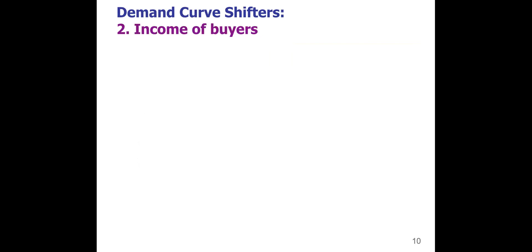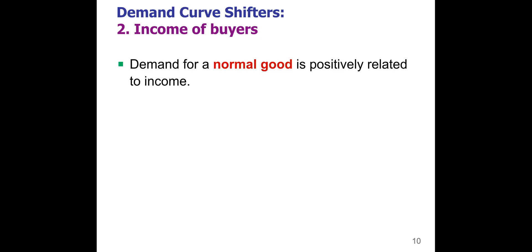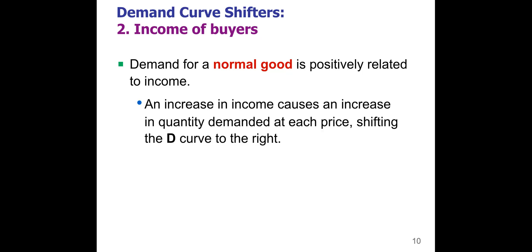The second thing that affects the demand line is the income of the buyers. If you have the same number of people in the market but their income is either higher or lower — maybe due to a recession or a booming economy — that's going to affect how much they can buy. For most things, we call these normal goods. This is positively related: if you have more money, you're going to buy more stuff. People with more income increase demand for products, shifting the demand line to the right. If income goes down for normal goods, we would decrease demand.